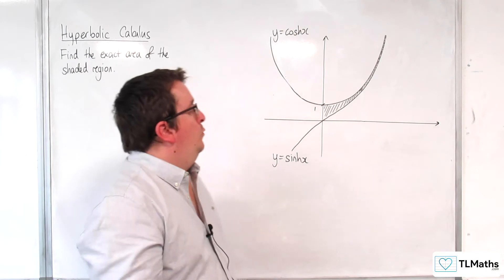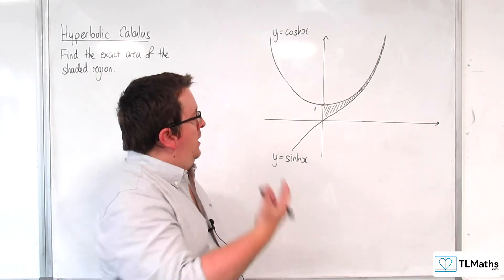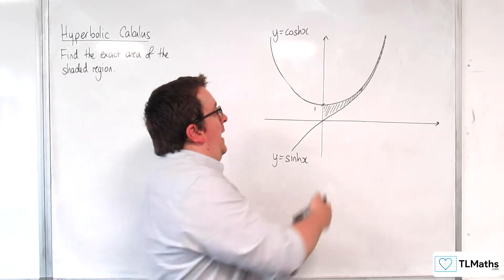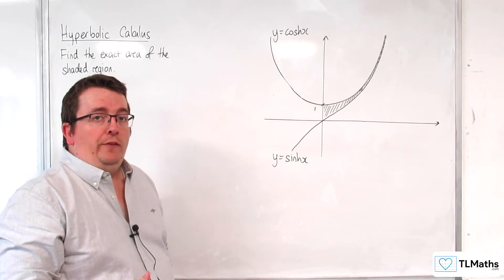In the previous video, we showed that the area bounded between y equals cosh x, y equals sinh x, and 0 up to log of 5, that area was equal to 4 fifths.